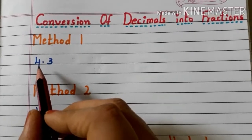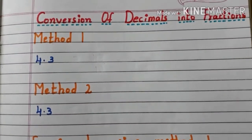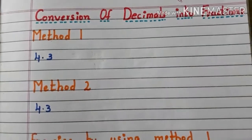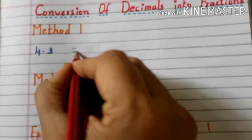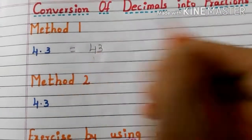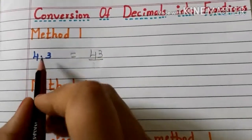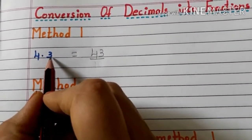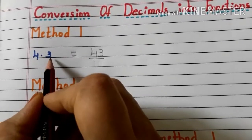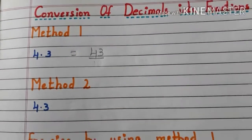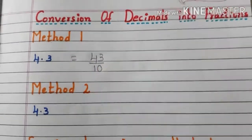Here we have the decimal number 4.3. First, what we have to do is write the number without any decimals — I am writing 43 here. And observe how many digits are there after the decimal point. Here in this example we have only one digit, so we have to write 10 in the denominator.